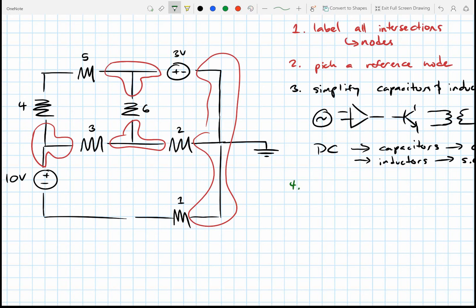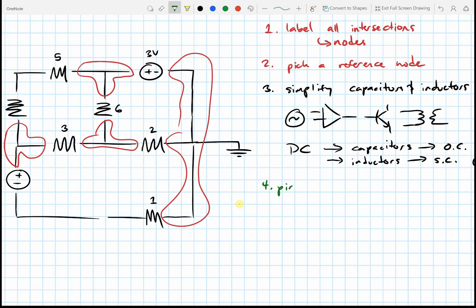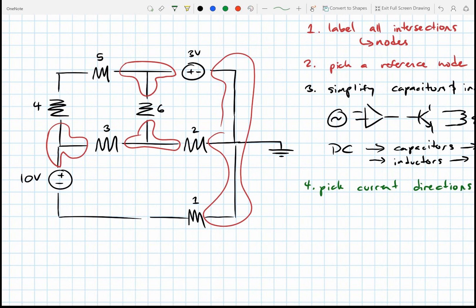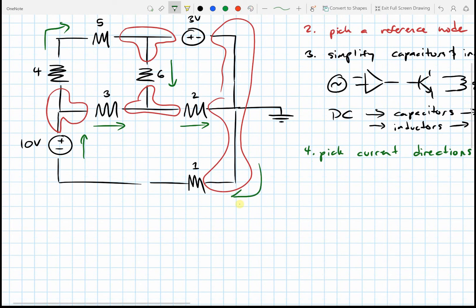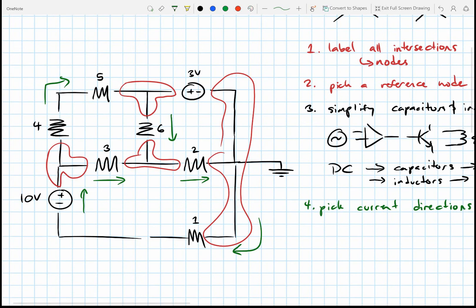Step number four: Pick current directions. Now these are arbitrary because if I decide this current's probably going in this direction and it turns out in real life it was coming this direction, I'm just going to get a negative number. So pick them however you want. Not even think about it. Pick them however you want. And if it's going that way this way, it's going this way that way. And let's say it's going that way. That one's going to be negative for sure.